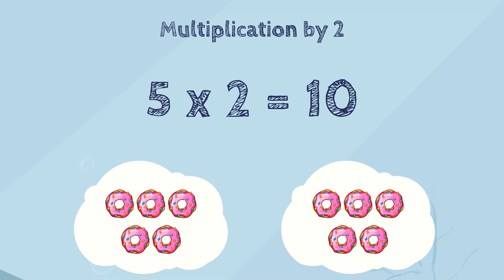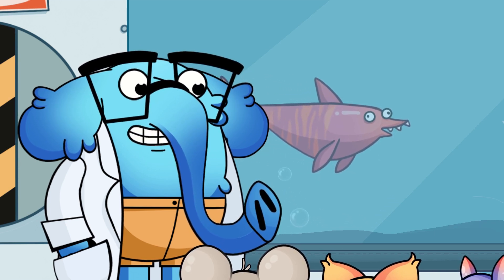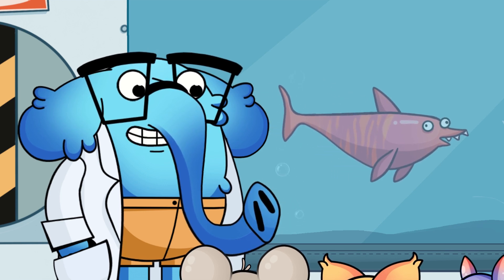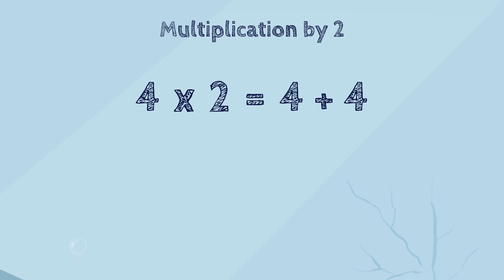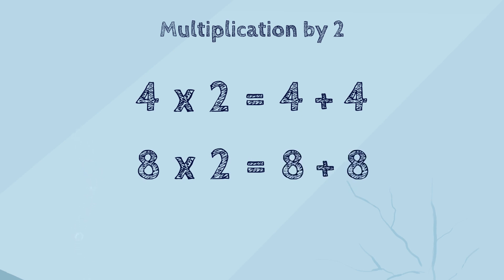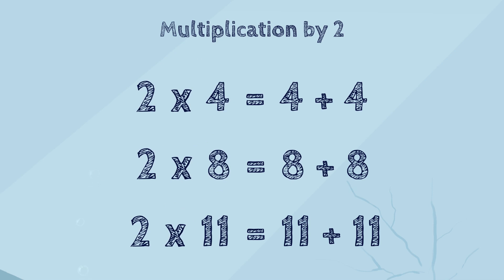You've understood the idea. Multiplication by two means that you just need to add the number twice. So you can always get the answer easily. Four by two is the same as four plus four. Eight by two is the same as eight plus eight. Eleven by two is the same as eleven plus eleven. We also know that the order of numbers in multiplication does not change the answer, so it doesn't matter where two is placed.